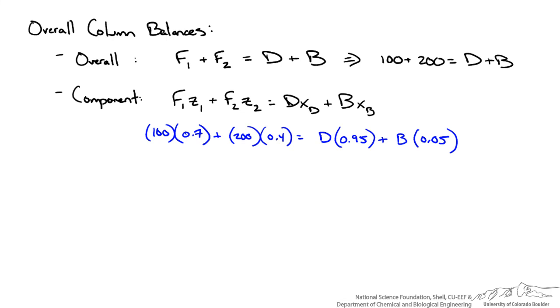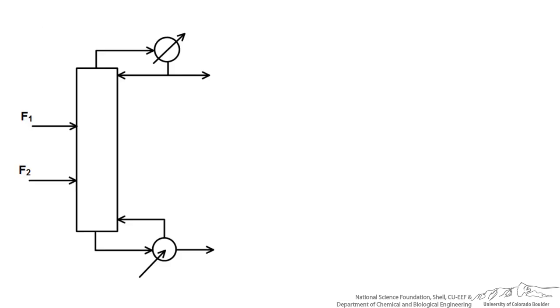We can use our overall balance and substitute for D or B in this case and plug into our component balance to solve since we have 2 equations 2 unknowns. When I solve I get B is equal to 150 moles per hour which means from our overall balance that D must also equal 150 moles per hour.